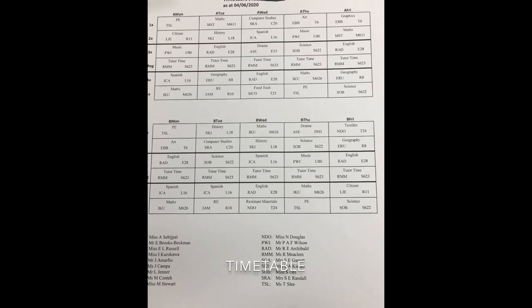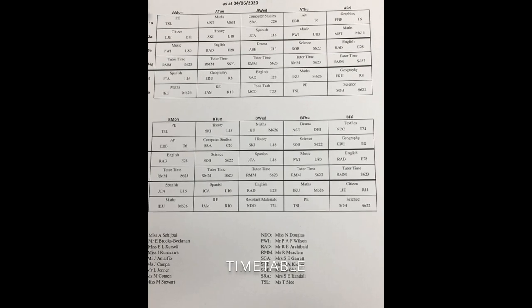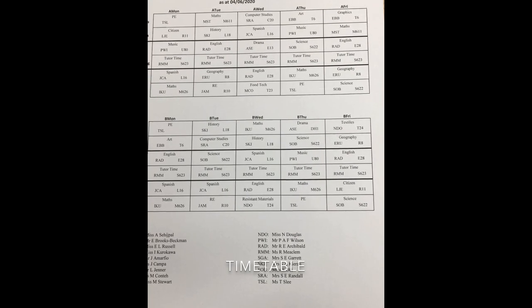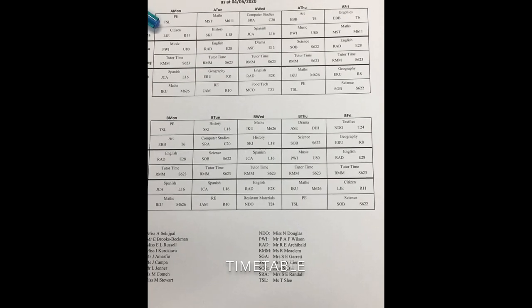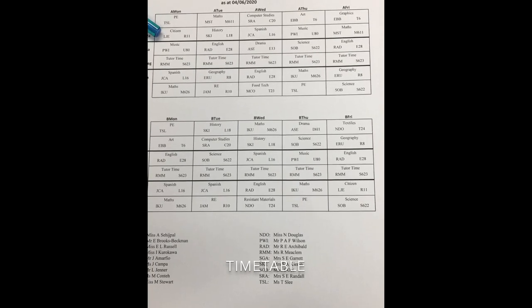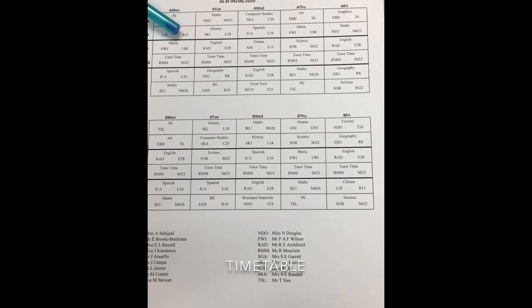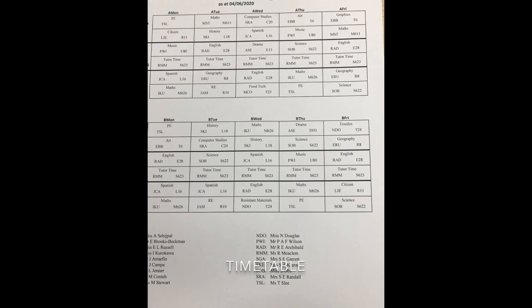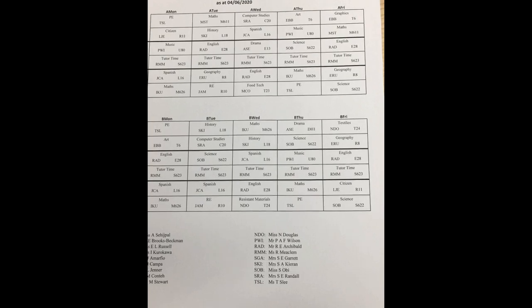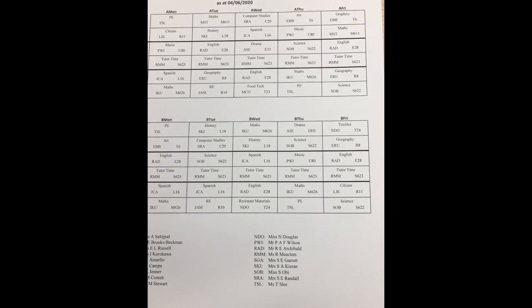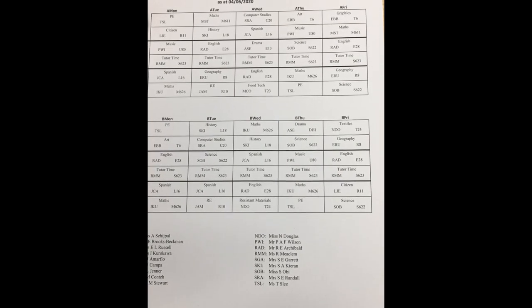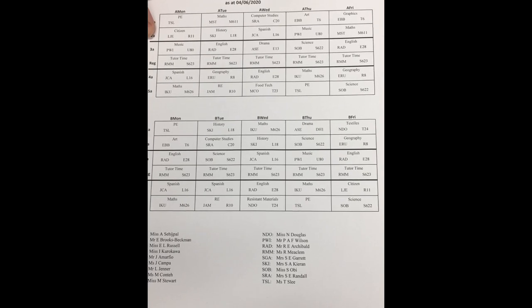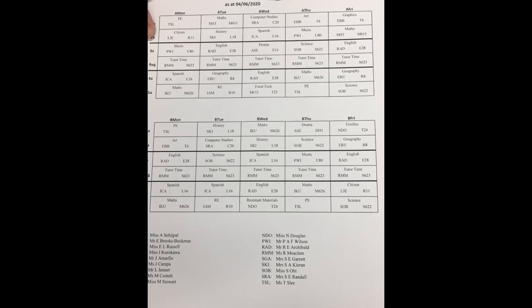So you can see that this student has PE period 1, and then period 2 will go to Citizenship with Mr Jenner in R11 — that's the room number. Don't worry about getting lost; there will be lots of support and we'll be on the doors doing that. Then you can see there's a thick line — that's when we have our break and you can go to the canteen if you want or go outside and meet up with your friends.